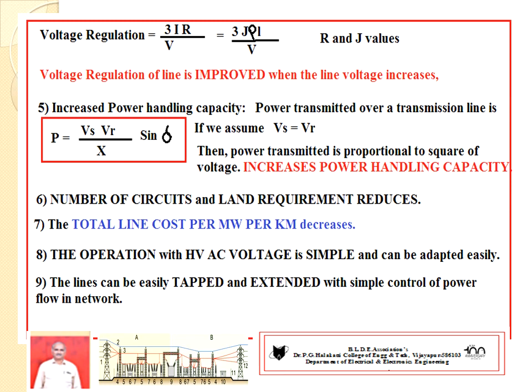With high voltage transmission, the number of circuits required is reduced and land requirement also reduces. The total line cost per megawatt per kilometer decreases. The operation of HVAC voltage systems is very simple and can be handled efficiently. Lastly, the lines can be easily tapped and extended with simple control circuits.